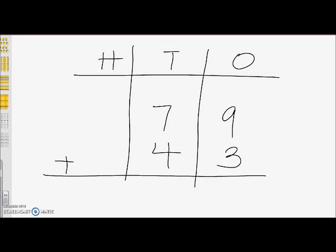First, start with the ones column like we did in our concrete model. 9 plus 3 is 12. Can we make a ten? Yes. Let's regroup.